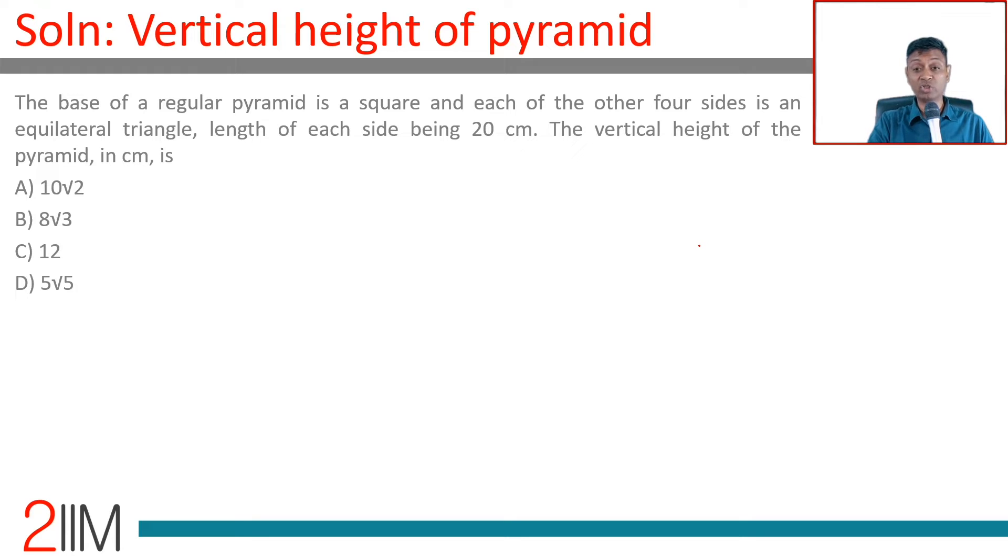The base of a regular pyramid is a square and each of the four sides is an equilateral triangle. The length of each side being 20 centimeters. The vertical height of the pyramid is a square, and then there are four equilateral triangles rising from here. So 20, 20, 20, 20, 20.